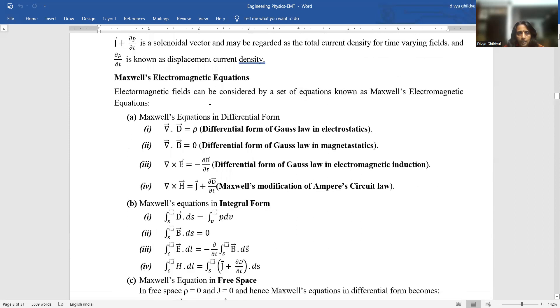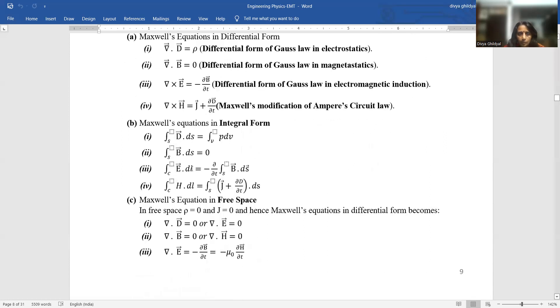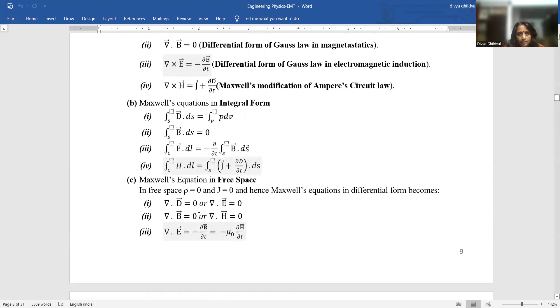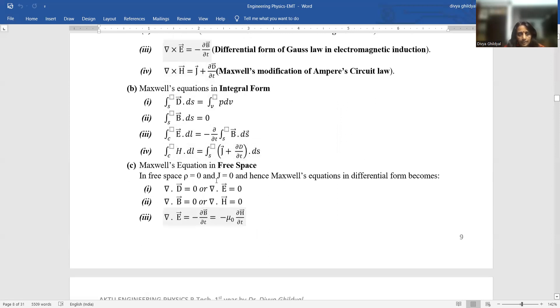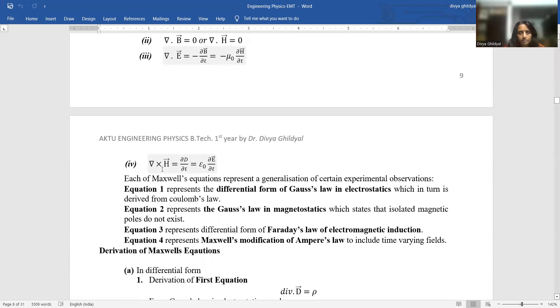So if you put rho equal to zero here, what happens? Del dot D equal to zero, del dot B equal to zero, third equation will remain as such, and the fourth equation - here this factor becomes zero. So your fourth equation becomes del cross H equal to del D by del T. D you can also write as epsilon naught E, and this equation takes this form.